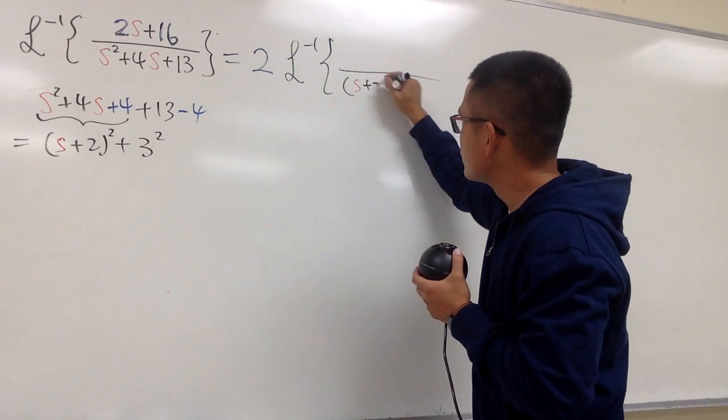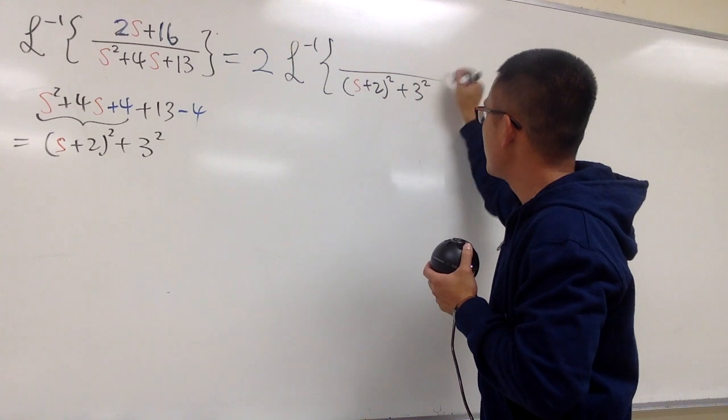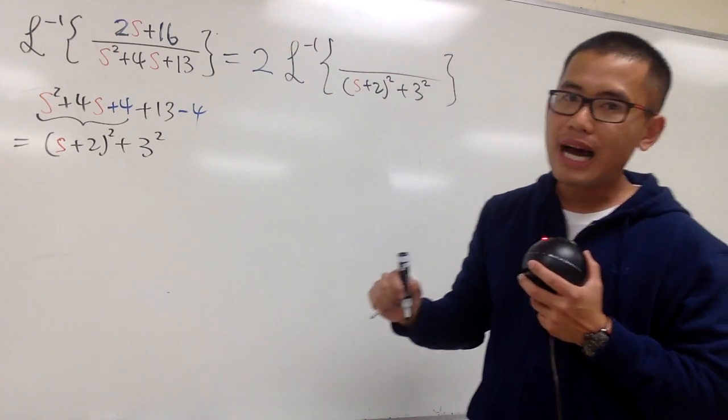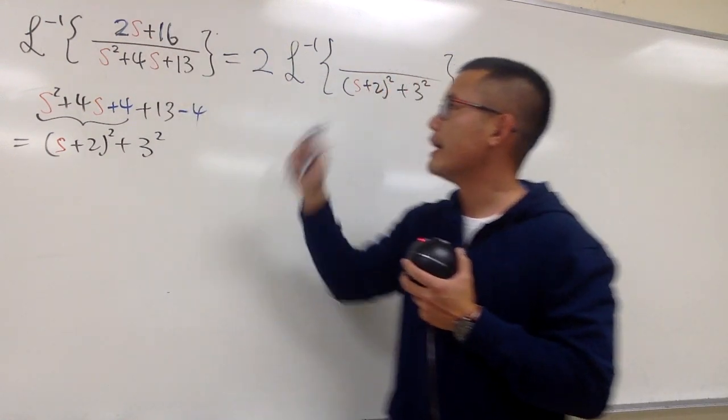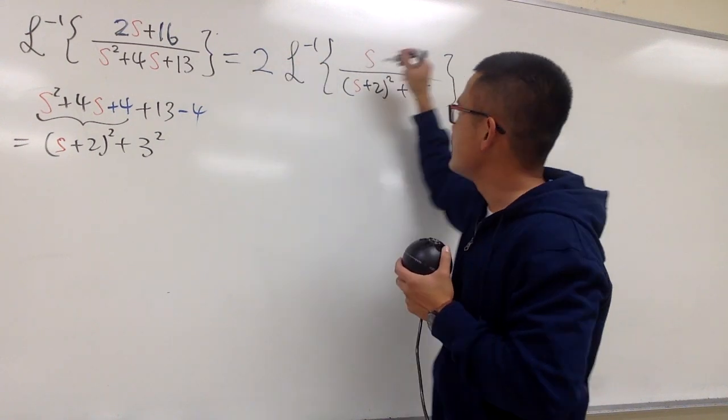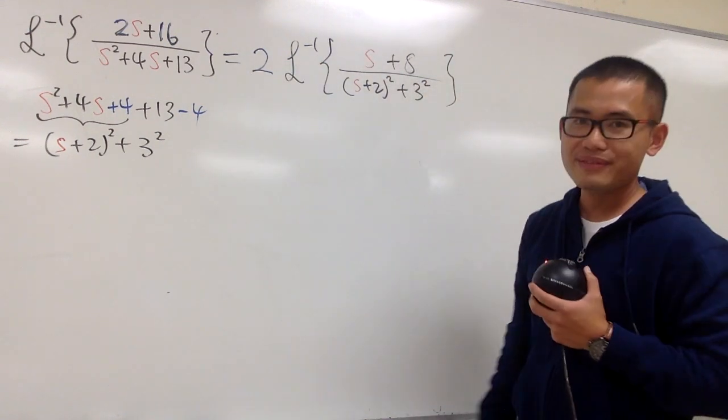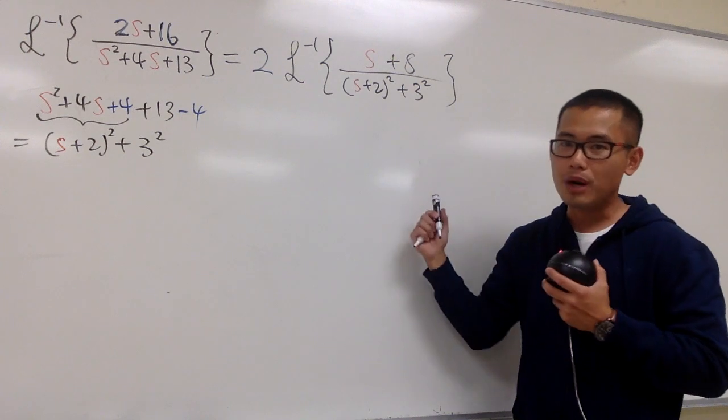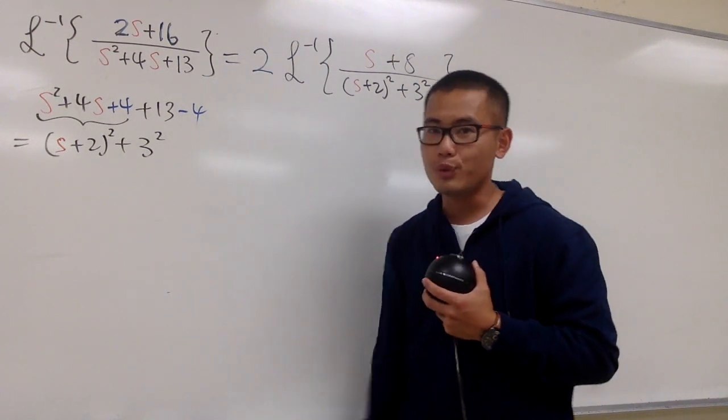We have the s plus 2 squared plus 3 squared, and on the top, I factor out the 2, right? So we will just have the s, and then plus 8, and this is what we have. And we should be able to take care of this, no problem. At the end, just multiply the 2 all the way in the front, isn't it?